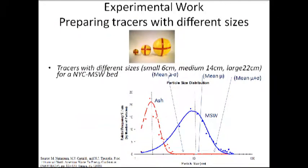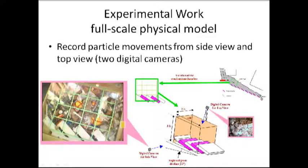Let me talk about experimental work. We prepared tracers with different sizes: small size, medium size, and large size according to the size distribution of MSW. Size is 6 cm, 14 cm, and 20 cm.